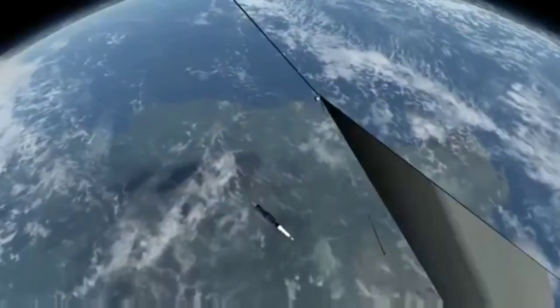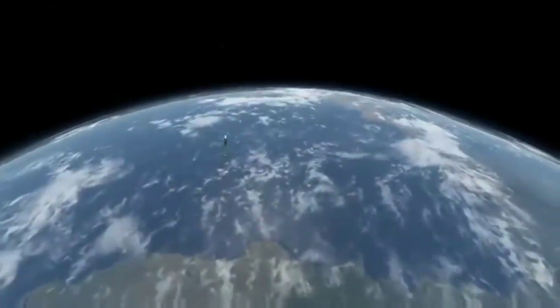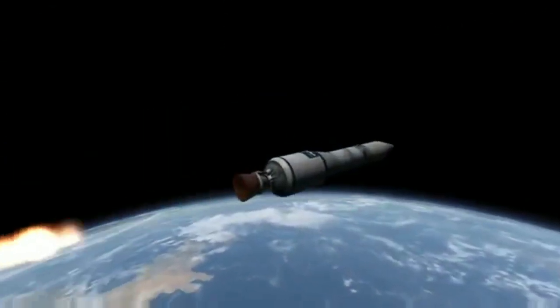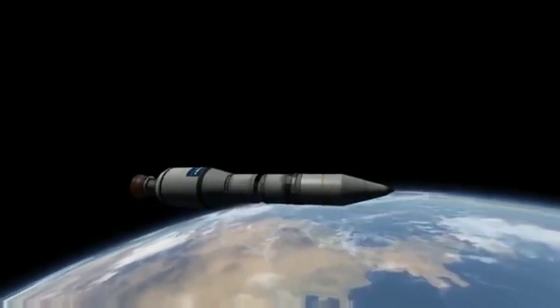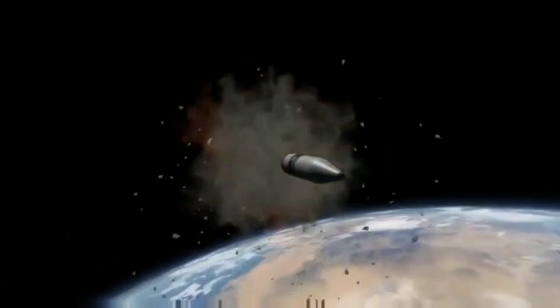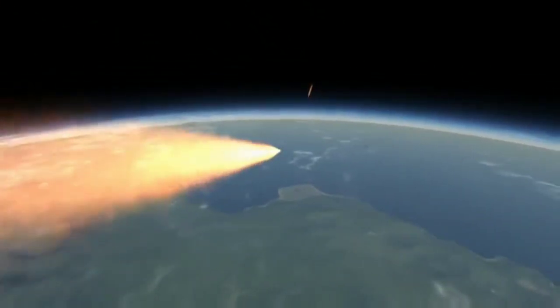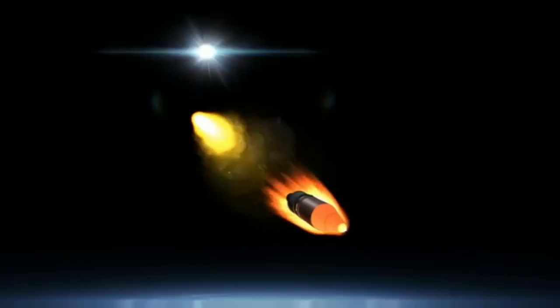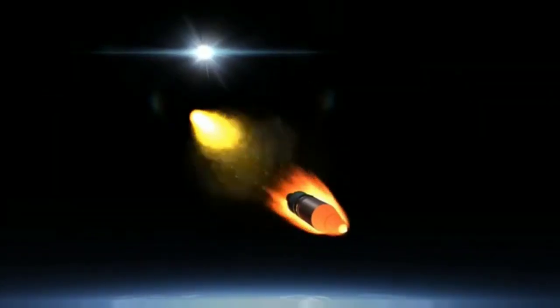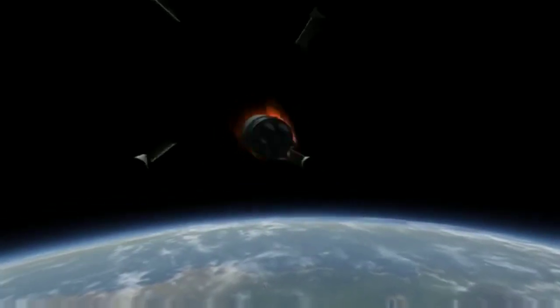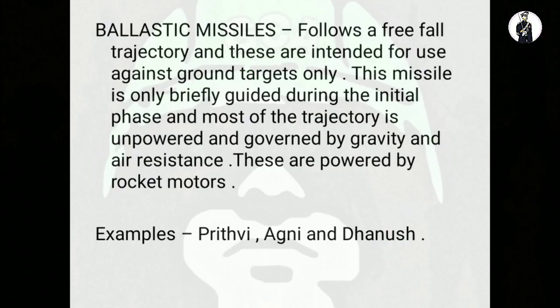Once they are powered during the initial phase, the rest of the flight is governed by gravity or air resistance. They are of different types — short range, medium range, and long range. Long-range missiles spend most of their time outside the Earth's atmosphere, and in the final terminal stage they return back into the atmosphere and hit the desired target. Because these missiles spend most of their time outside the atmosphere, they have longer range compared to cruise missiles. Ballistic missiles held with the Indian armed forces include the Prithvi missile system, the Agni missile system, and the Dhanush missile system.